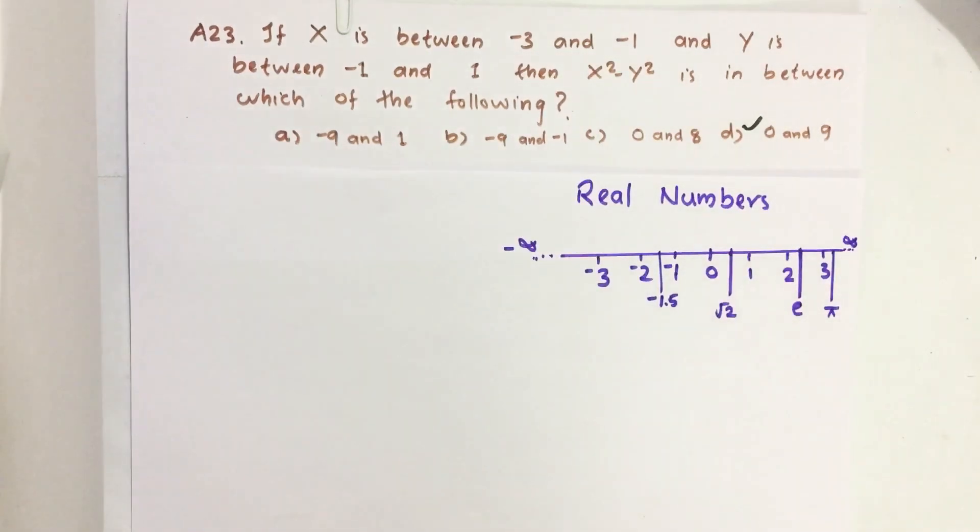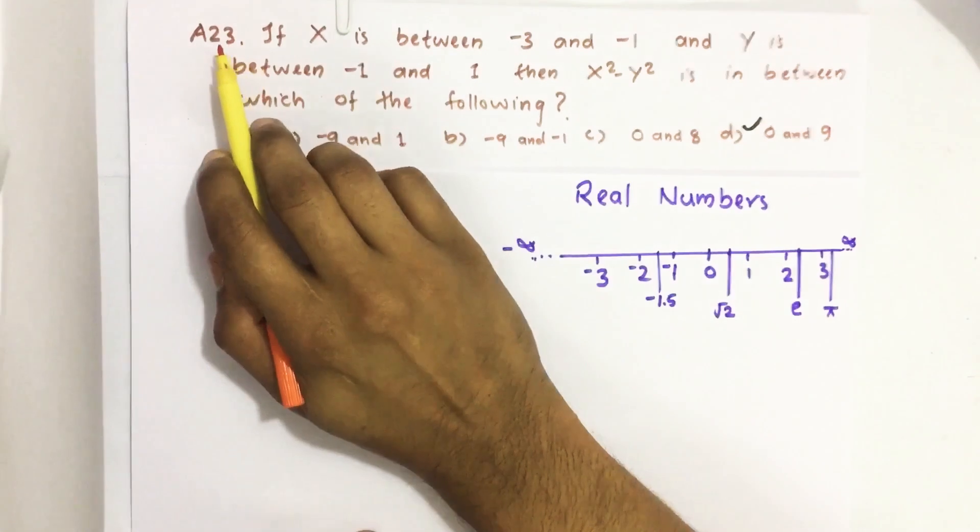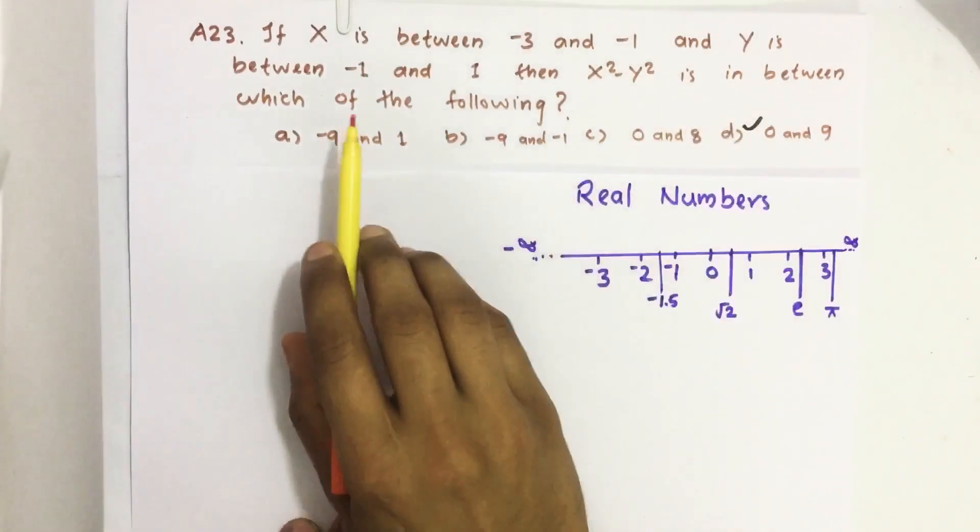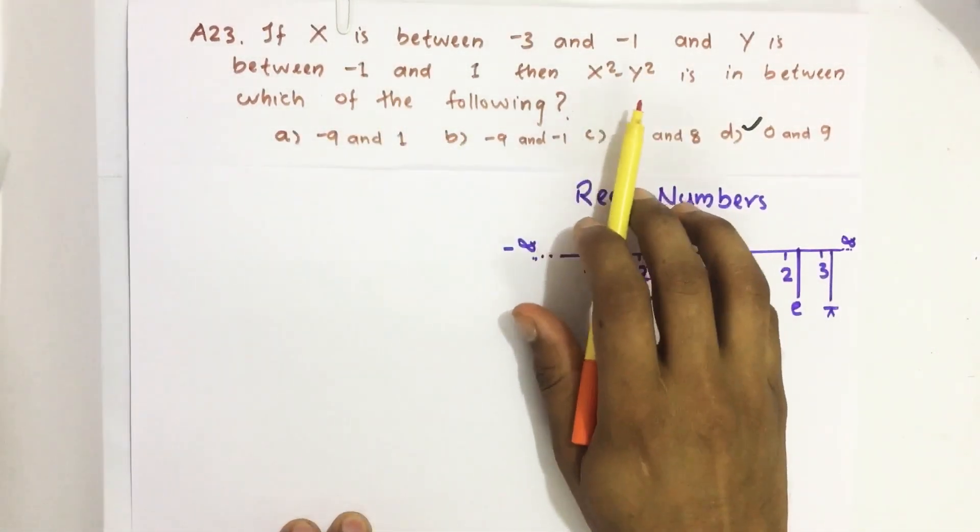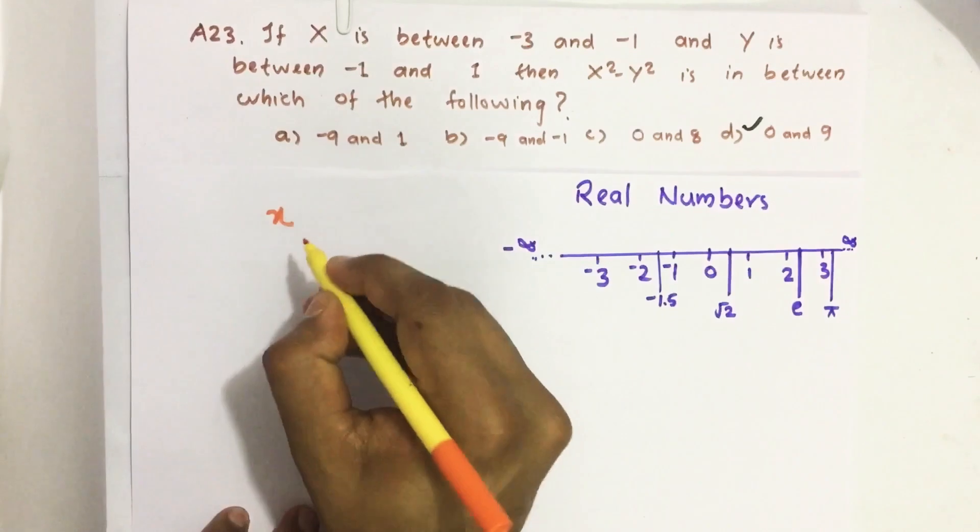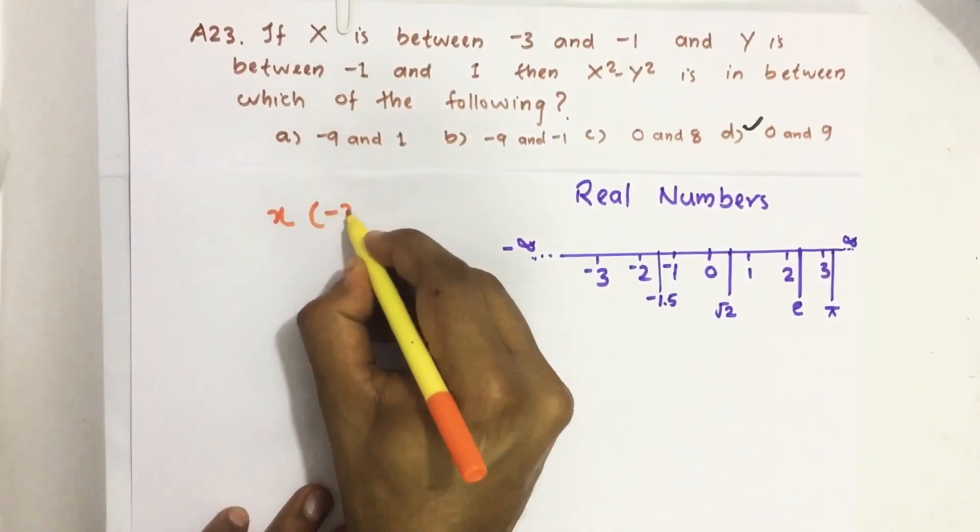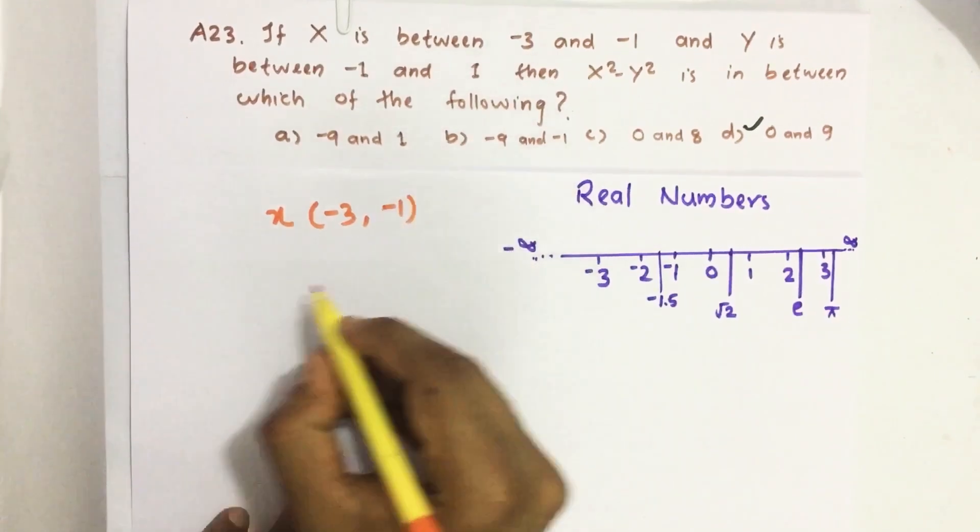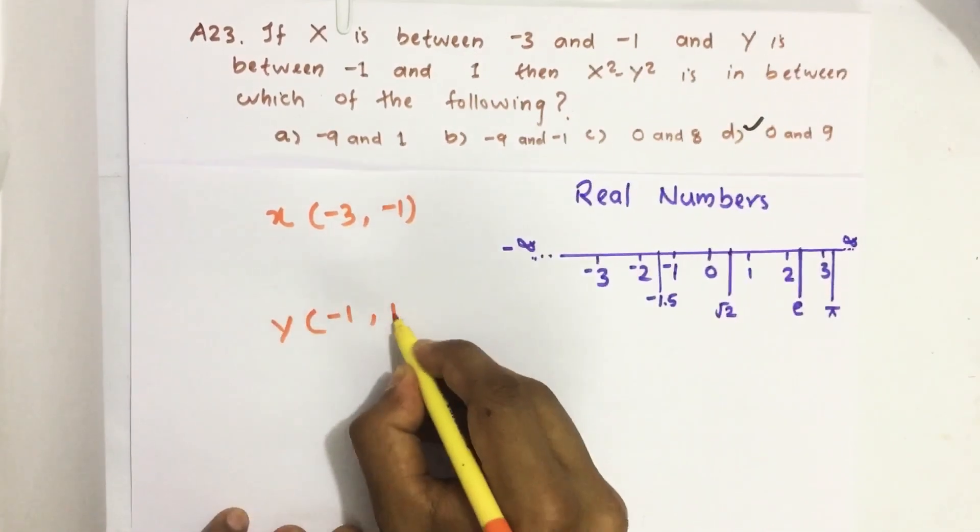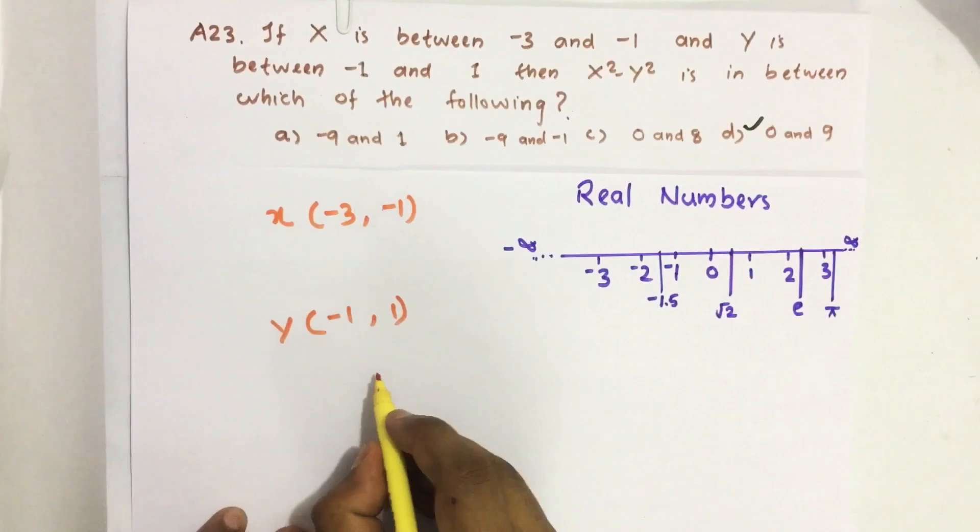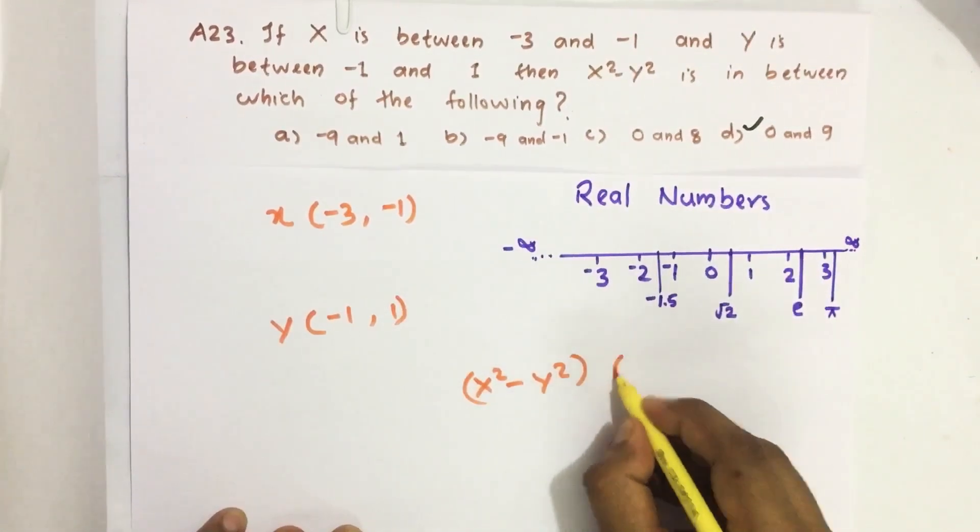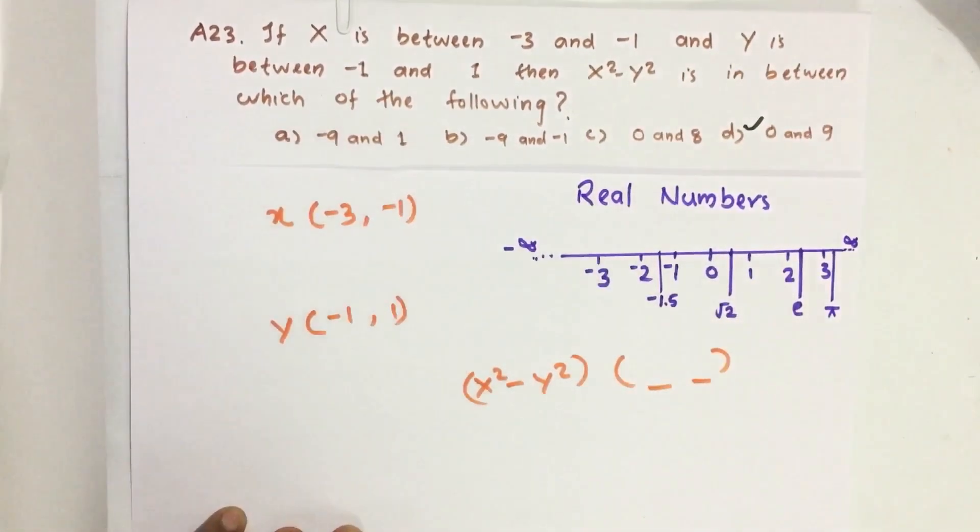Hello everyone, here I'm going to solve 2018 CSAT question number 23 from question paper series A. If x is between -3 and -1, and y is between -1 and 1, then x² - y² is in between which of the following? So here x is between -3 and -1, similarly y is between -1 and 1, then x² - y² is between which of the numbers.